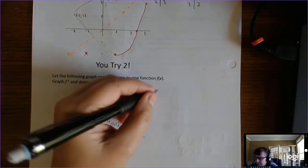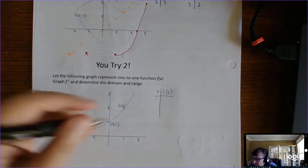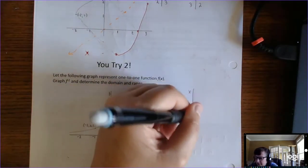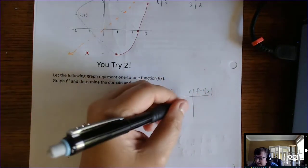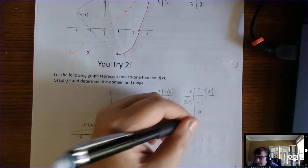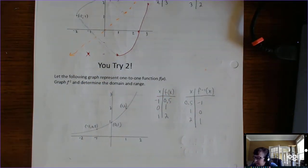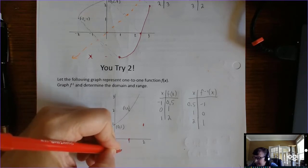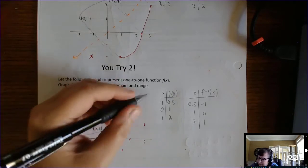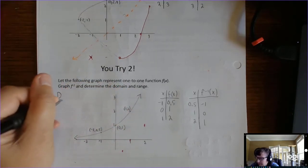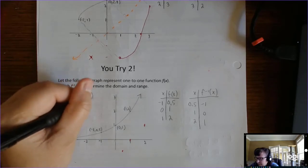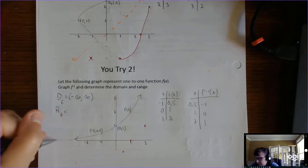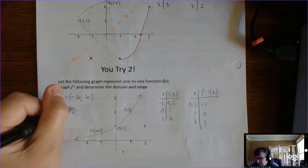For the second practice problem, I've got these ordered pairs: negative 1, 0.5; 0, 1; and 1, 2. So for the inverse, we'll switch those: 0.5, negative 1; 1, 0; 2, 1. We graph those points and notice that this goes on forever and ever in both directions. So the domain of f is all real numbers, and the range of f — this looks like it's going to hug the line y equals 0 like an exponential — so the range is parentheses 0 to infinity.